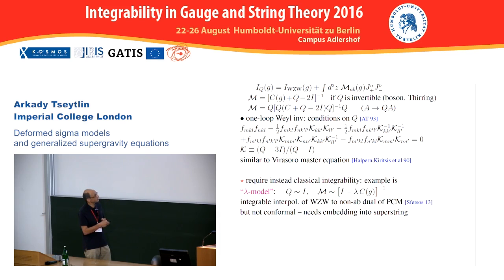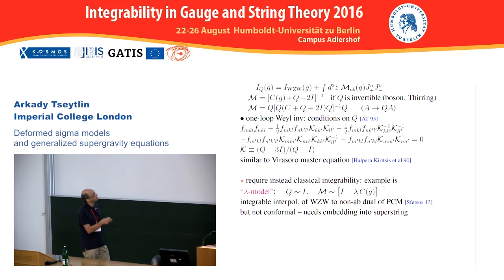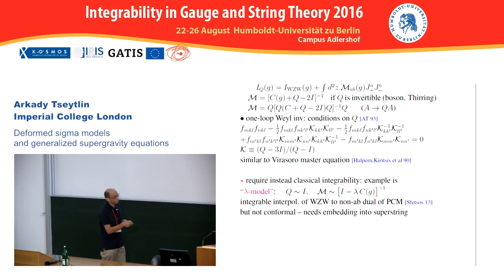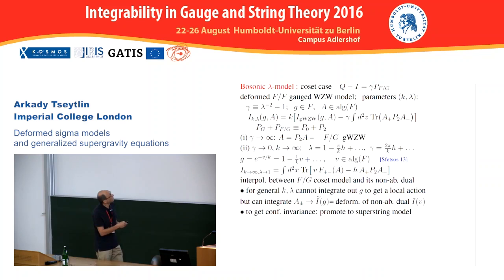Generically these T-dualities will lead to solutions of generalized equations. Apart from thinking of abelian T-dualities, we can start with the principal chiral model and try to deform it by adding some bilinear currents with a non-trivial matrix that may depend on the group element. When such a deformation preserves integrability or conformal invariance, one could try to study these conditions. If we first look at conformal invariance, we need to start not with the principal chiral model but rather with the WZW model.